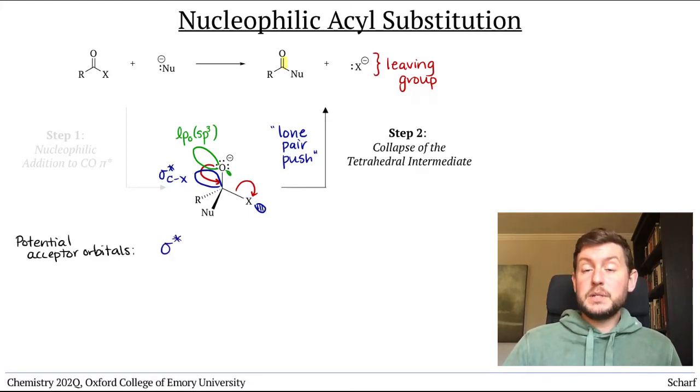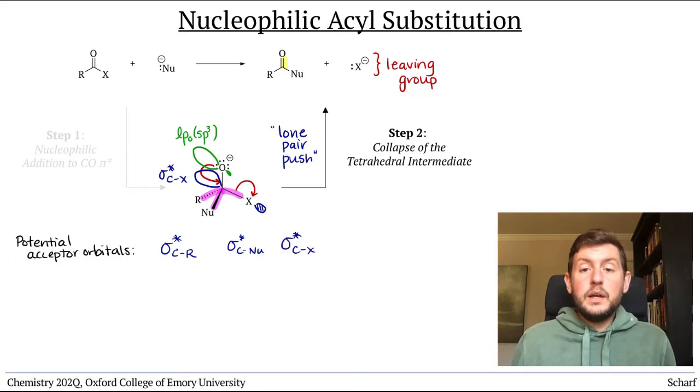In our generic example here, they are sigma star CR, sigma star C nucleophile, and sigma star CX. So how do we know which one the lone pair will prefer to interact with? It depends on two factors.